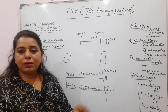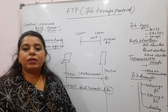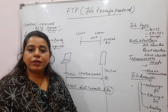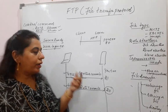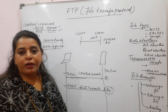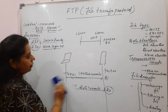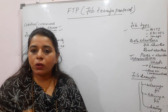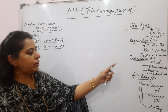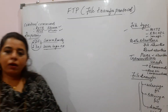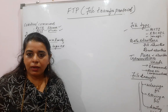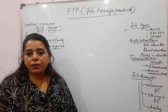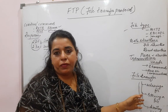In any application layer protocol, it is the request and the response. In the request, you are sending commands, and in the response, you get all the responses, and whatever file you requested will be sent to the client. In FTP, the client before transferring the file should also specify the type of the file, the data structure, and the transmission mode. Using the control commands, the connection is established first, and then to send data over the data connection, these attributes must also be specified by the client.